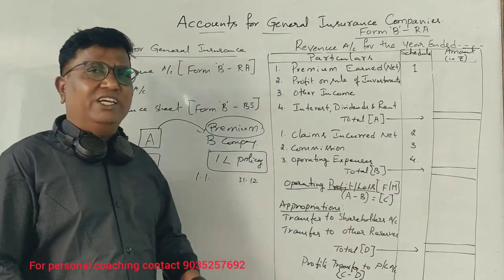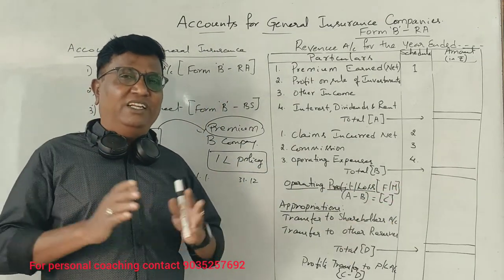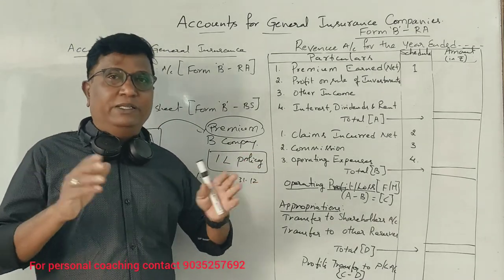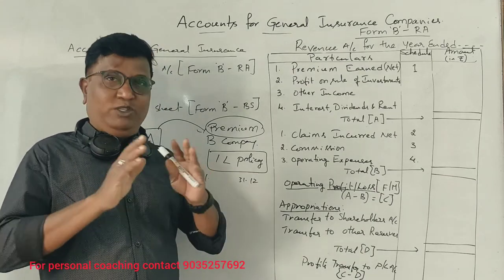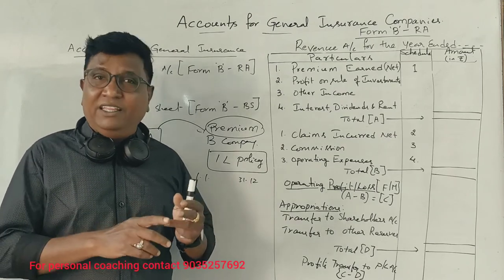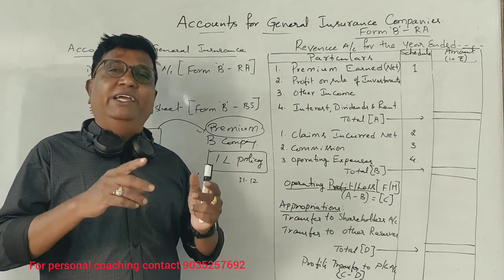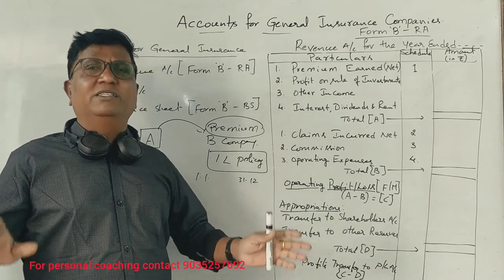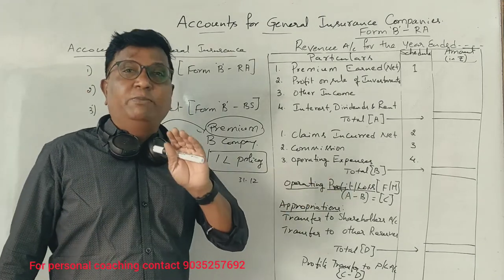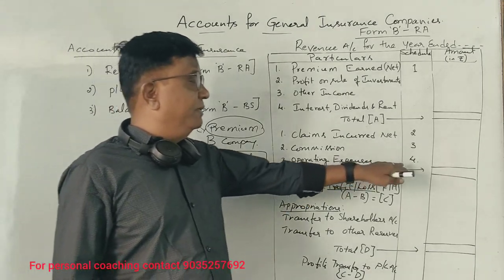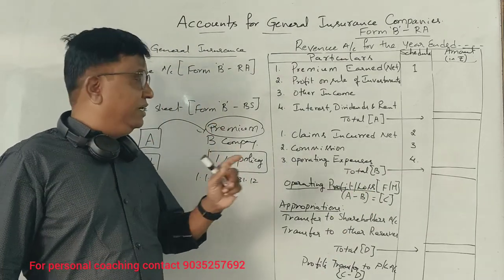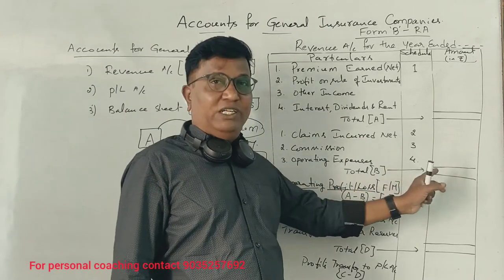Next, General Insurance Company business has administration, operating expenses, and management expenses. So office open, office rent, employee salaries, electricity, water, printing, stationery — these are operating expenses. Operating expenses are not required to prepare for separately; they are included in the schedule.